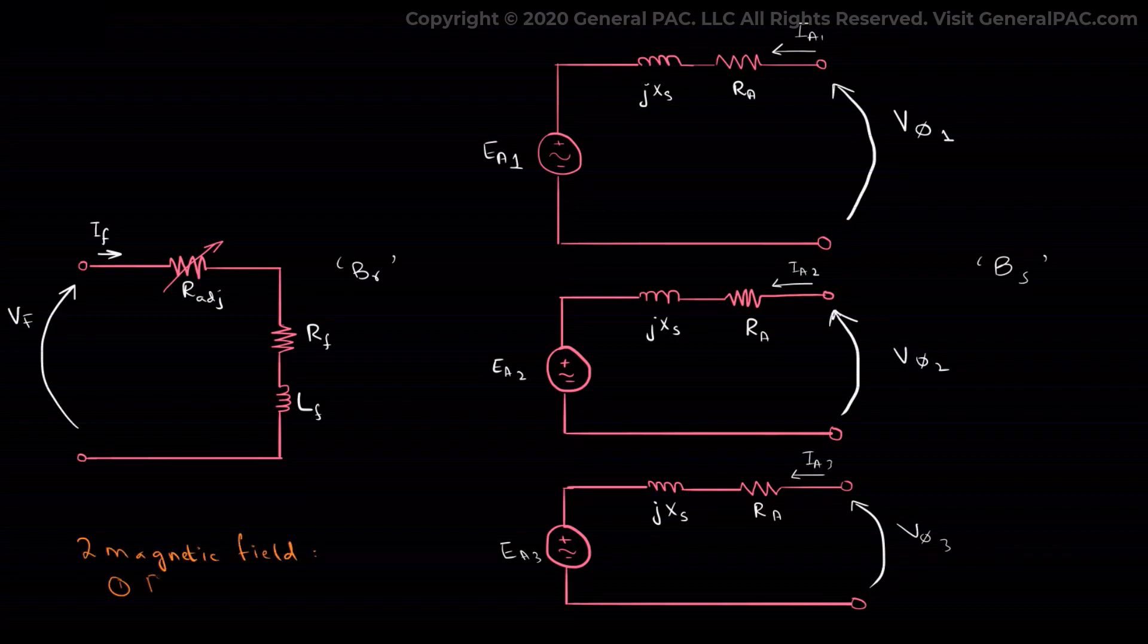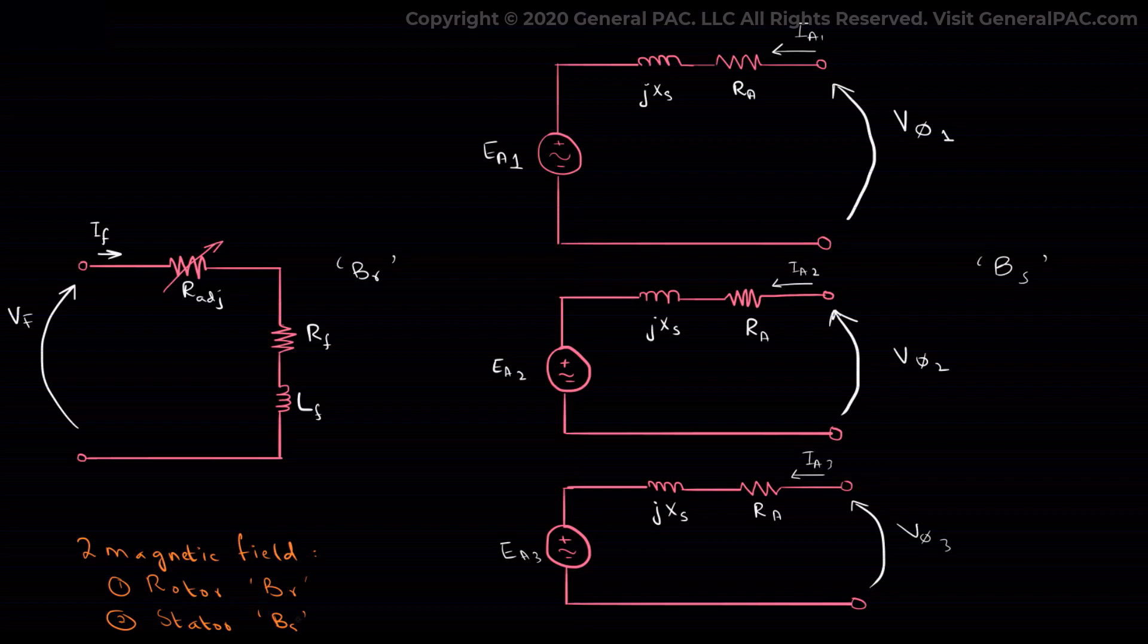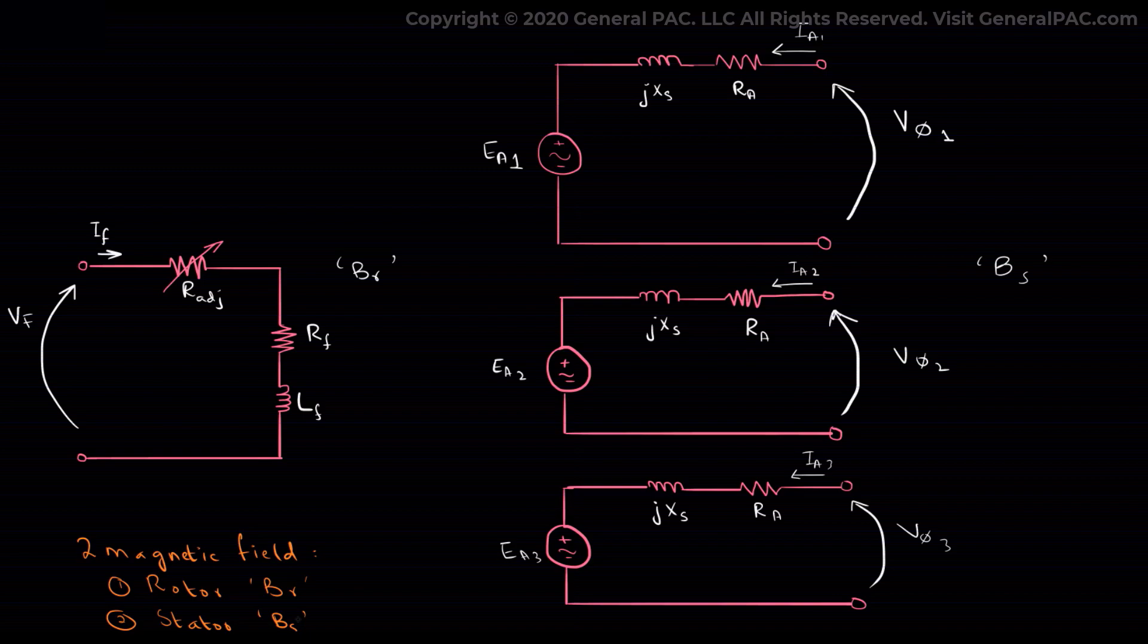We can say that there are two magnetic fields present in the motor: the rotor's magnetic field Br and the stator's magnetic field Bs. The rotor's magnetic field will always tend to sync with the stator's magnetic field, and that is the reason behind why we call it a synchronous motor.